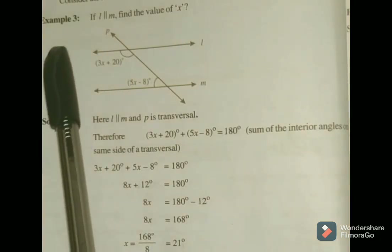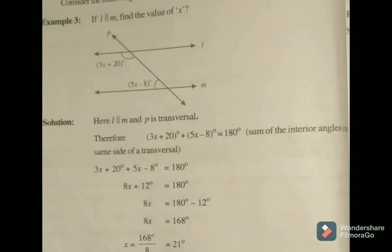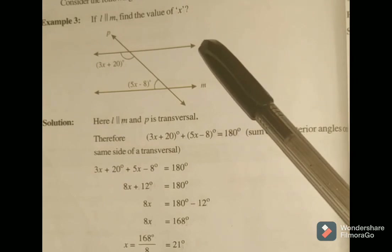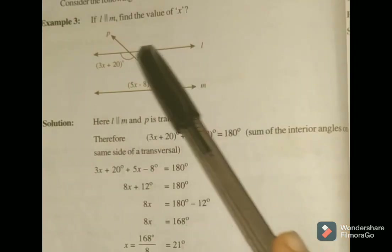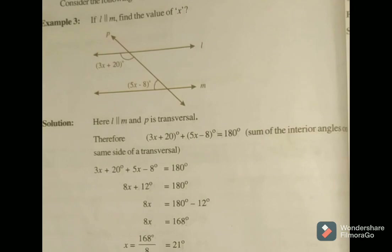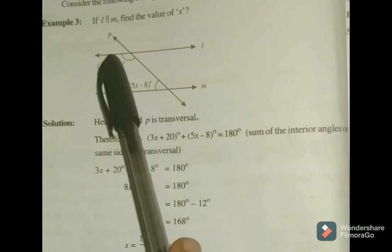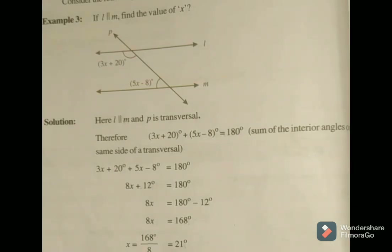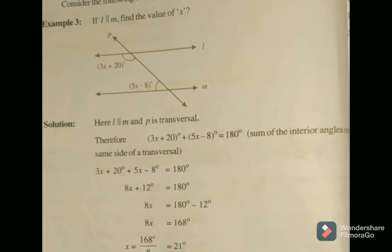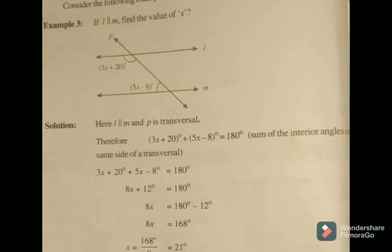Example: If L parallel M, find the value of X. Line L and line M are parallel and P is the transversal. These two angles are interior angles on the same side of the transversal.